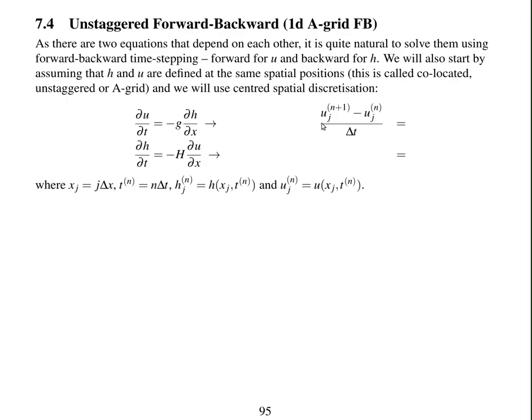So for du by dt, going forward in time, we've got u at time level n plus 1 minus u at time level n divided by delta t. This equation is being represented at time level n, which is why we've gone forward in time to get the gradient in time.